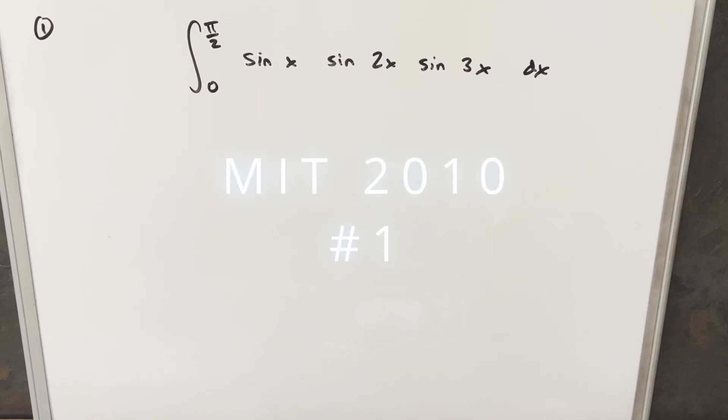Hey, we have an interesting problem here today from the MIT Integration B 2010. This was problem number one. We have the integral from 0 to pi over 2, sine x, sine 2x, sine 3x, dx.